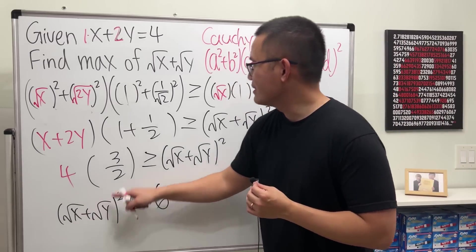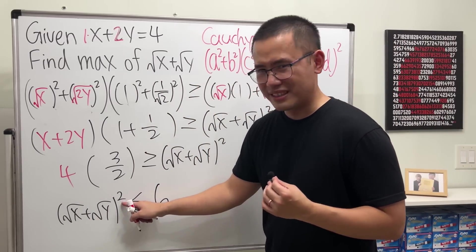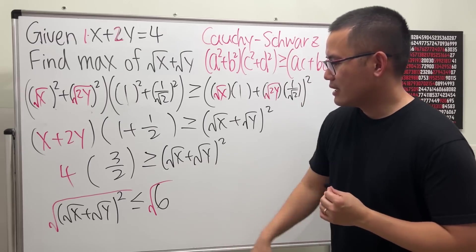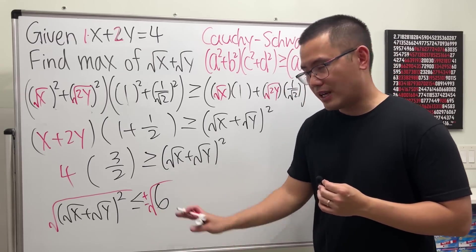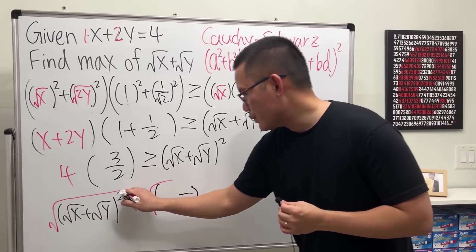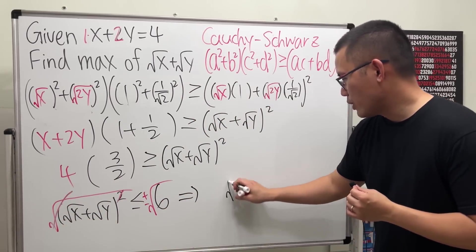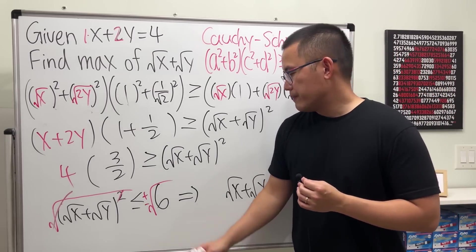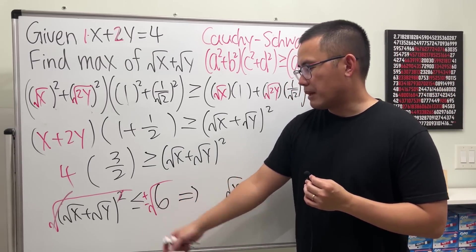Now, we have this, which is what we want. To the second power though, don't worry. Just take the square root on both sides. Maybe the plus minus. Oh, no. This implies the inside here, after we cancel this out. Square root of x plus square root of y. It's in between negative square root of 6 and positive square root of 6.